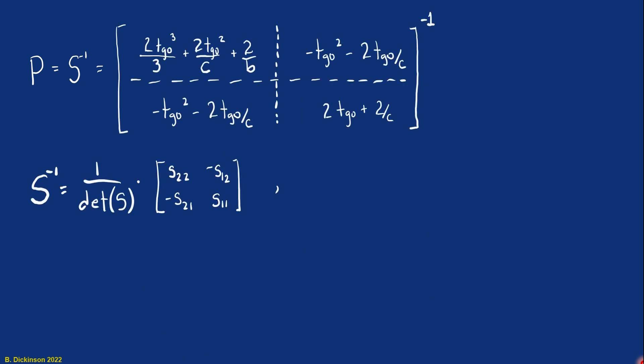So the solution of our Riccati equation is S inverse. We now know the terms of S. So we just need to invert this two-by-two matrix. Here's the formula for that inversion. We need to evaluate the determinant of S. There's the formula for the determinant. And now let's just substitute in those elements to evaluate the determinant.